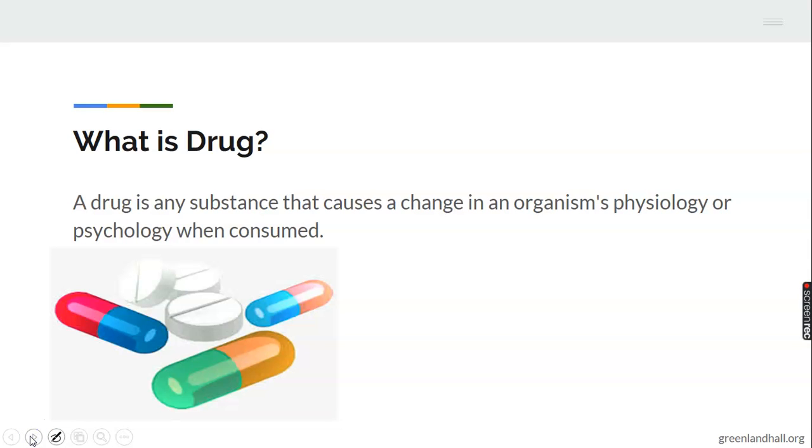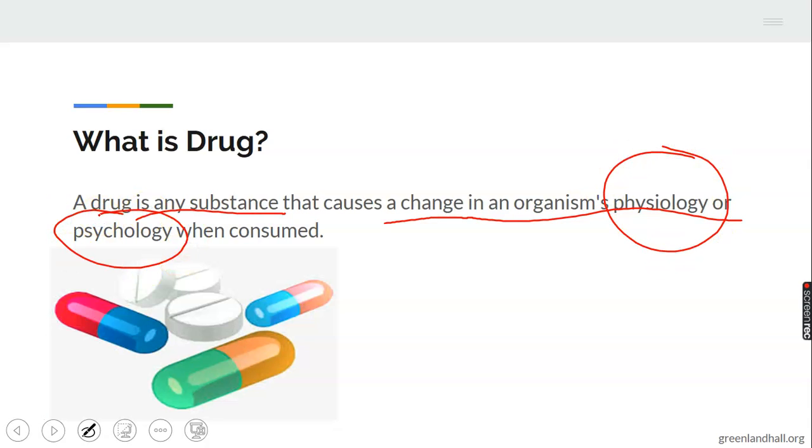Let's start with our definitions of terms. What is drug? Drug is any substance that causes a change in an organism's physiology or psychology when consumed. So whatever it is that we take into our body that causes change in our body physiology and psychology, the way our body reacts, the way our body works physically, we can see the changes.